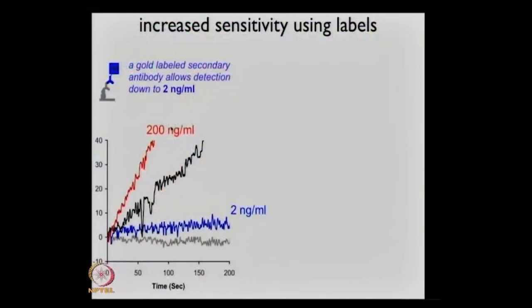We are broadly discussing different types of detection systems. We had 200 nanograms per mil in the previous slide, but now I'm going to introduce a secondary antibody — in this case labeled with a little piece of gold. We found out later we don't need that gold label, but for this graph it had a gold label, and we can bring detection down from 200 nanograms per mil to 2 nanograms per mil.